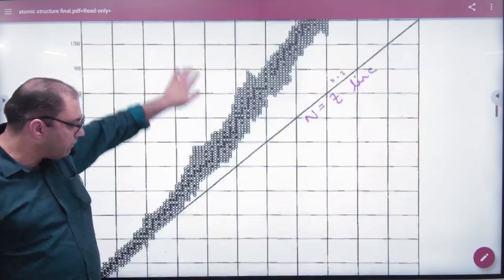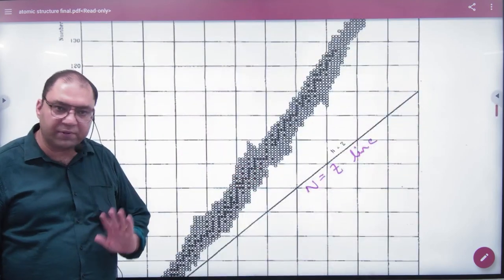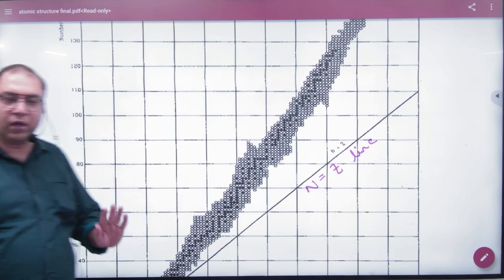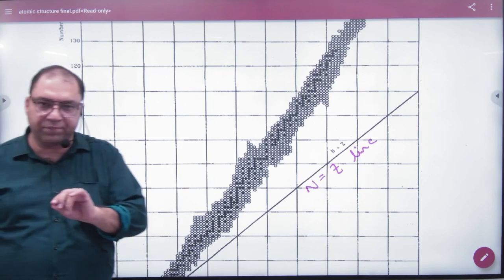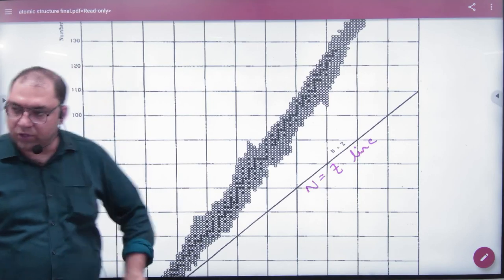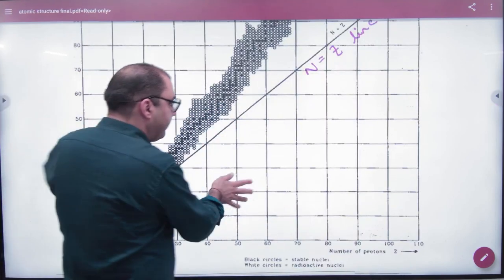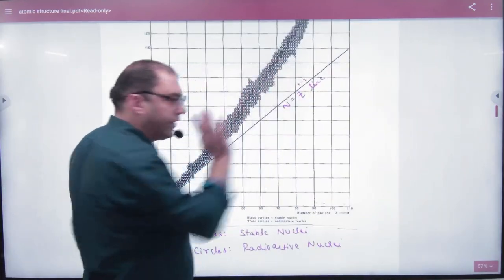Neutrons represent N and protons Z. So if in any element N and Z are equal, what will be the graph? A straight line at an angle of 45 degrees. This graph will be that. The problem is finished.